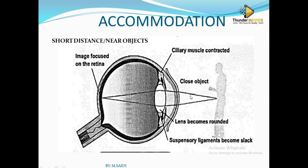When light comes into the eye, it will be refracted by the cornea and then falls onto the lens. If you see an object which is near, you see it as big. If you see an object which is far, you see it as small. So if it's near, the lens must be big — it must be more convex, it must be thicker.